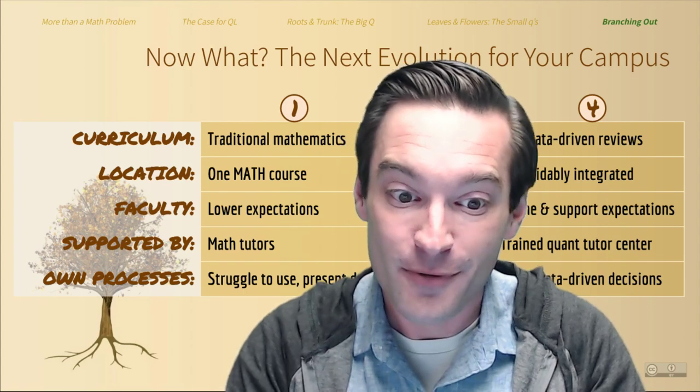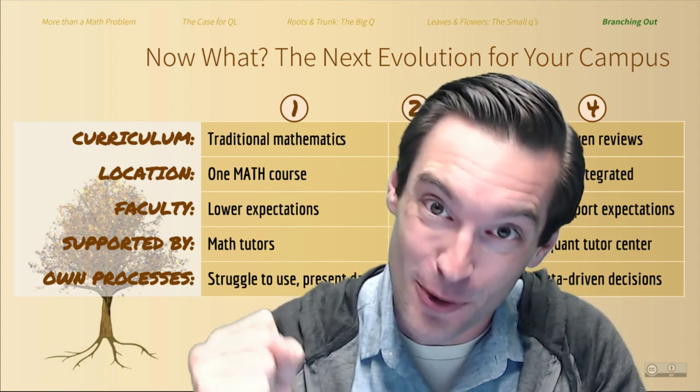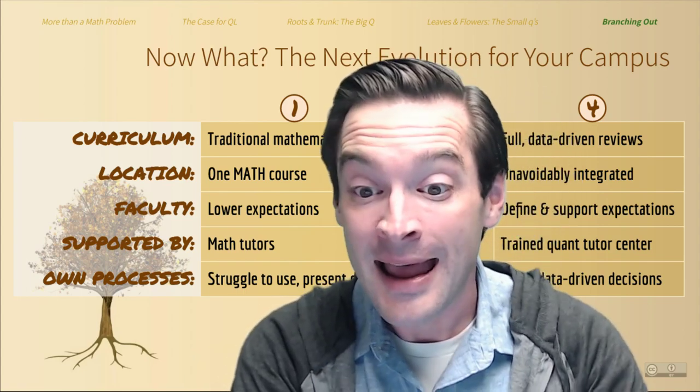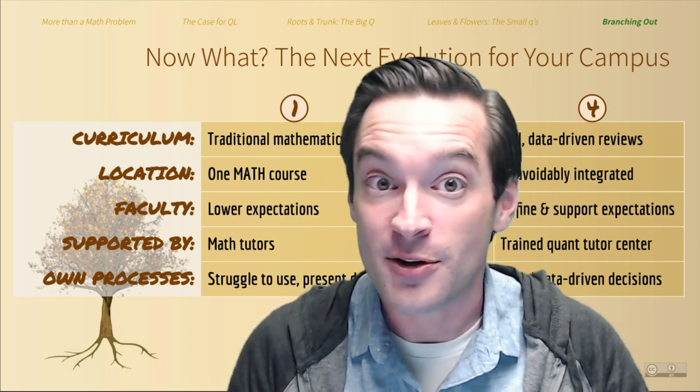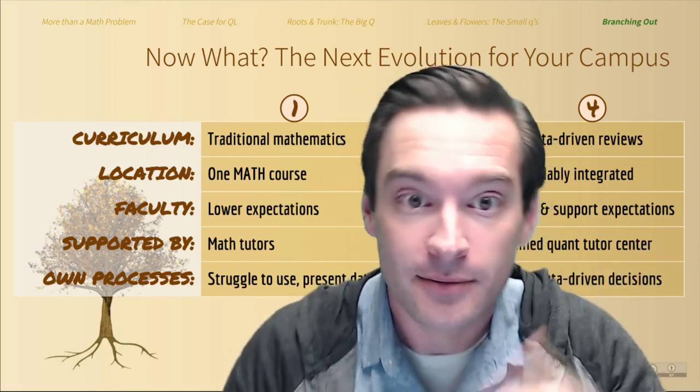And if you rated yourself at level four, congratulations on your robust program for quantitative literacy — let me know when I can come and visit your campus to see how you did it. Roots, trunk, leaves. Basic skills, a big Q experience, and small Q's galore. However mature your quantitative literacy tree is, I hope that the resources in this video can help you to water it. Whatever your next steps are, I wish you the best in taking them. A more numerate world awaits.